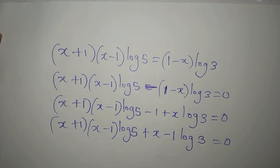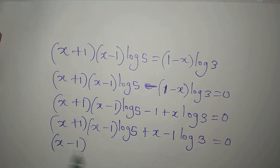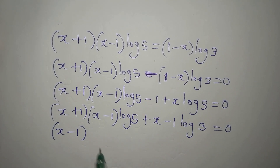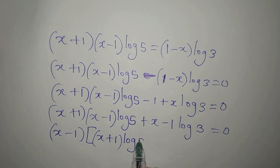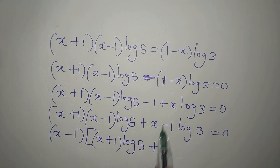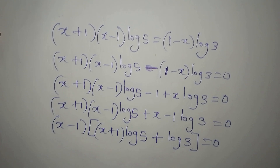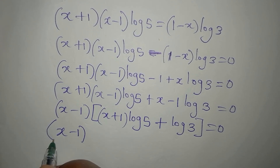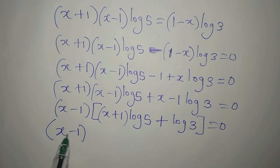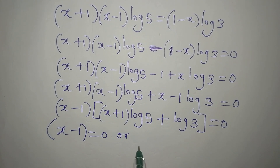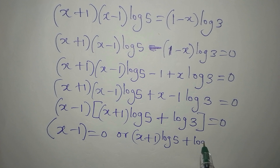Now we have something common to both terms, and that is (x - 1). So (x - 1) is the common factor. Factoring it out, we get (x - 1) times [(x + 1) log 5 + log 3] equals 0.